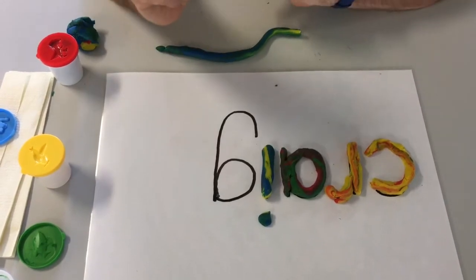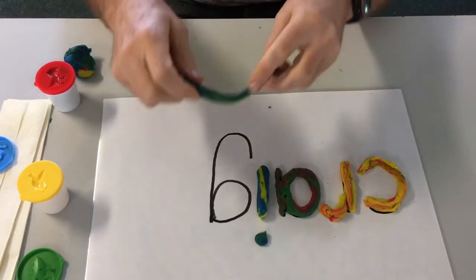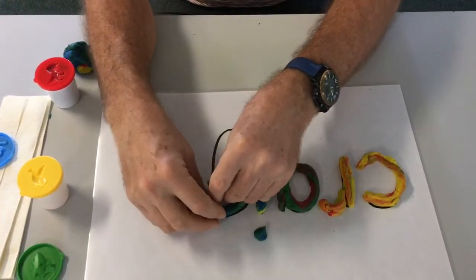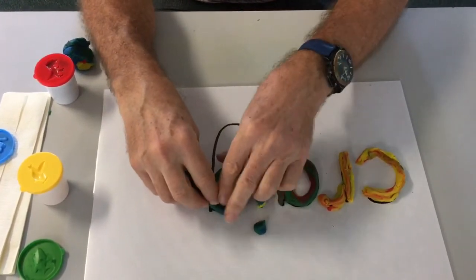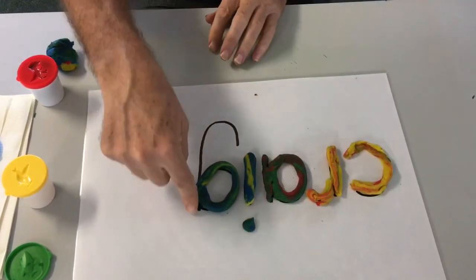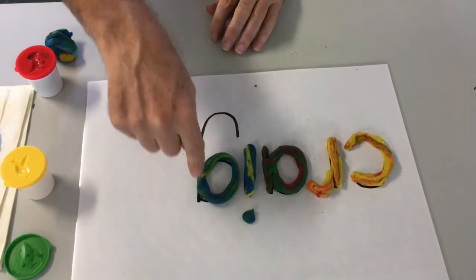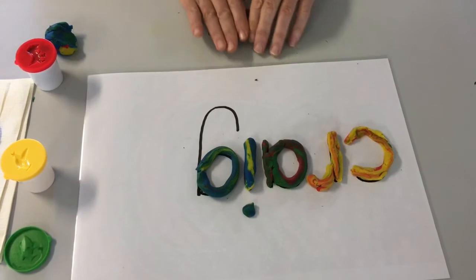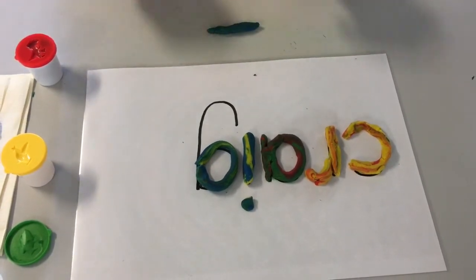One letter to go. Lucky last. I'm going to do the circle again for the letter G. And then this big hook shape. I've got to get some more Play-Doh out.